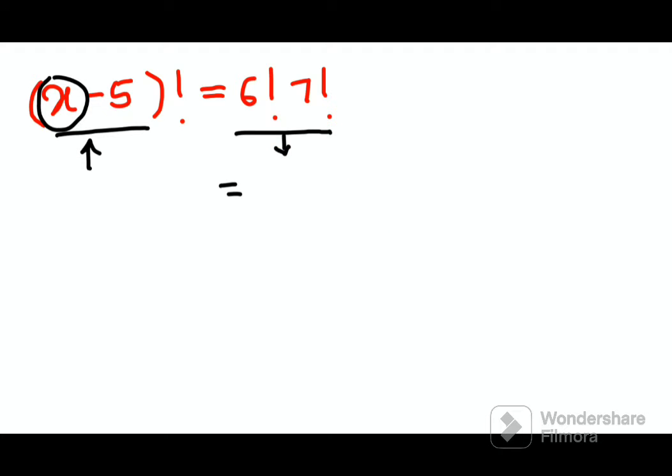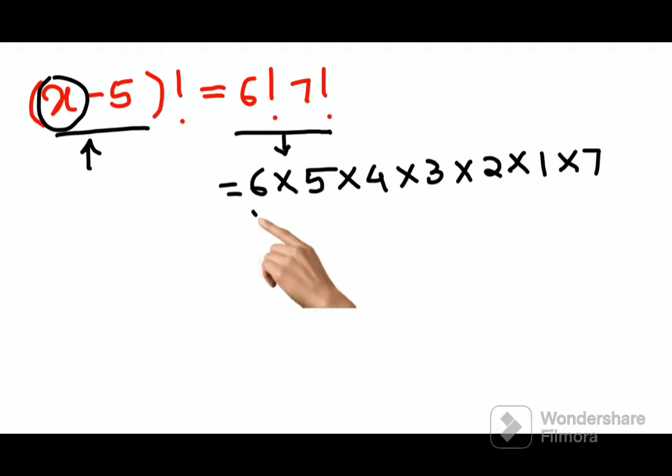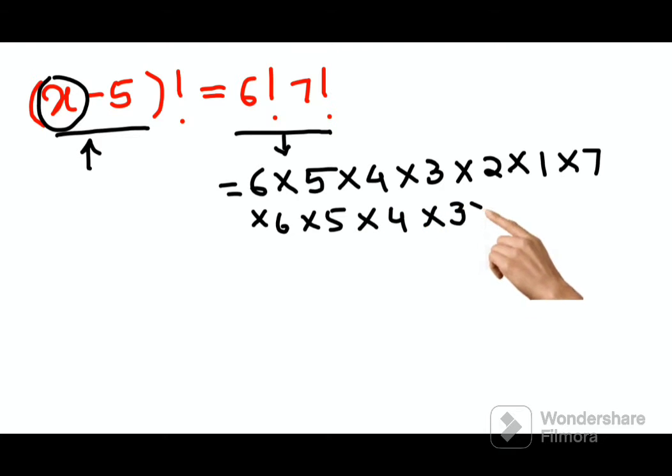So now look closely, we will write 6 factorial as 6 into 5 into 4 into 3 into 2 into 1. Similarly, 7 factorial can be written as 7 into again 6 into 5 into 4 into 3 into 2 into 1.